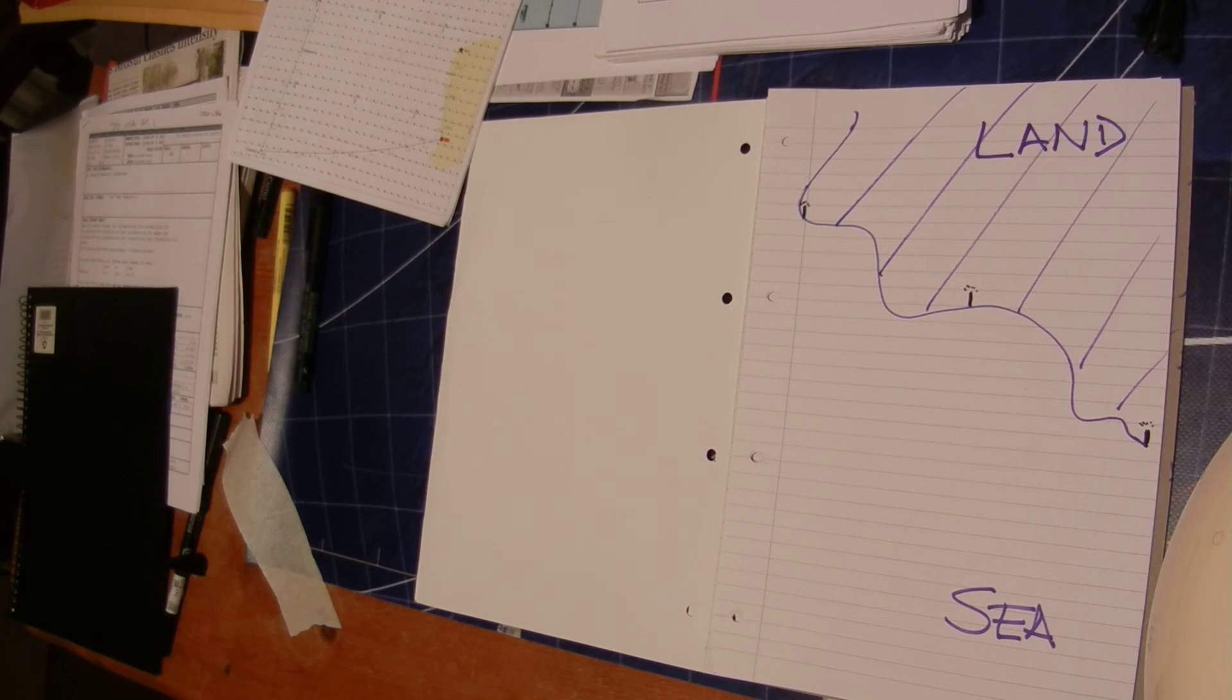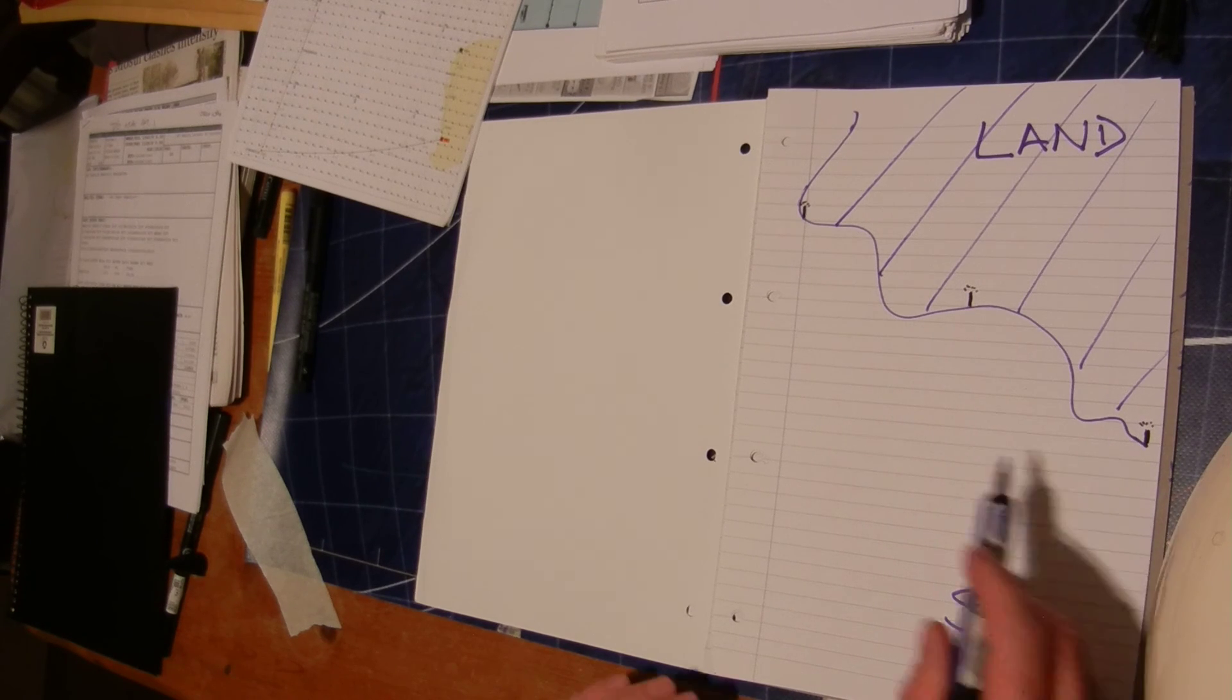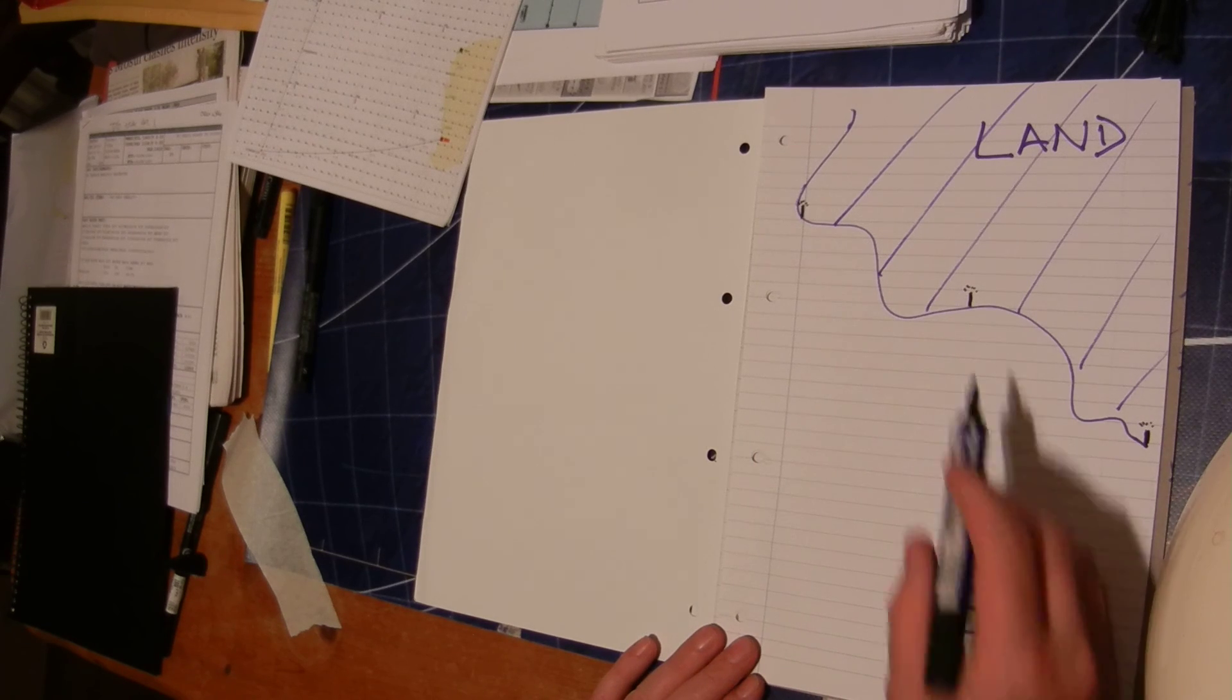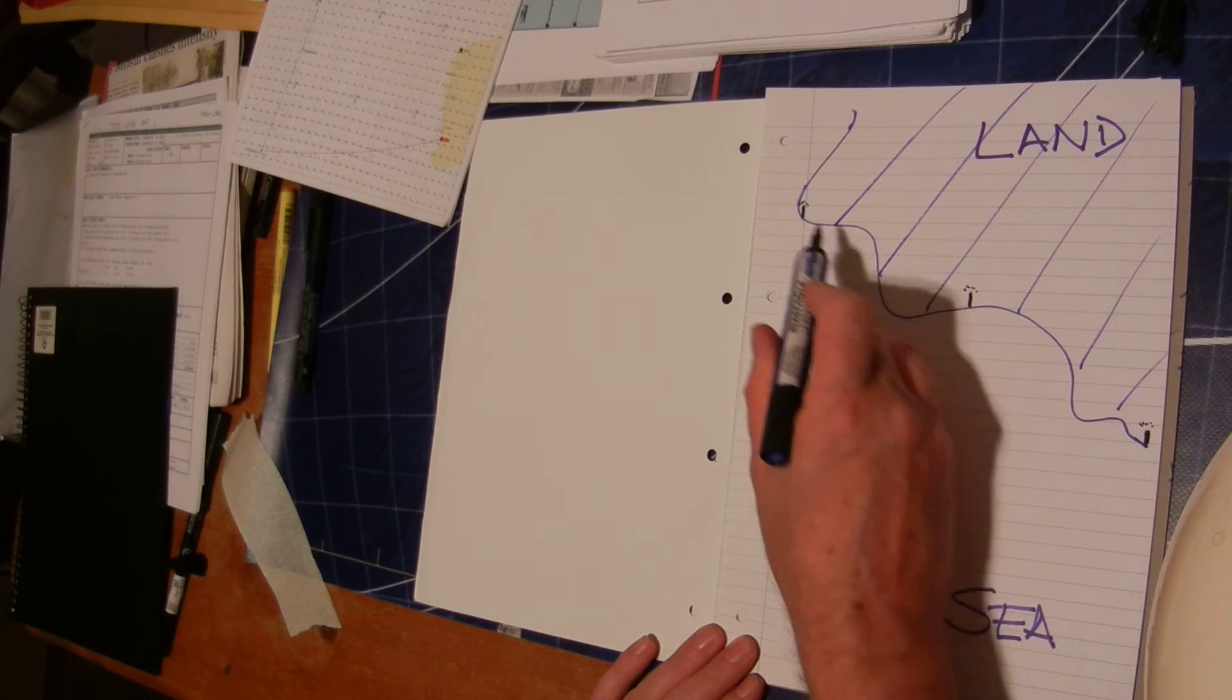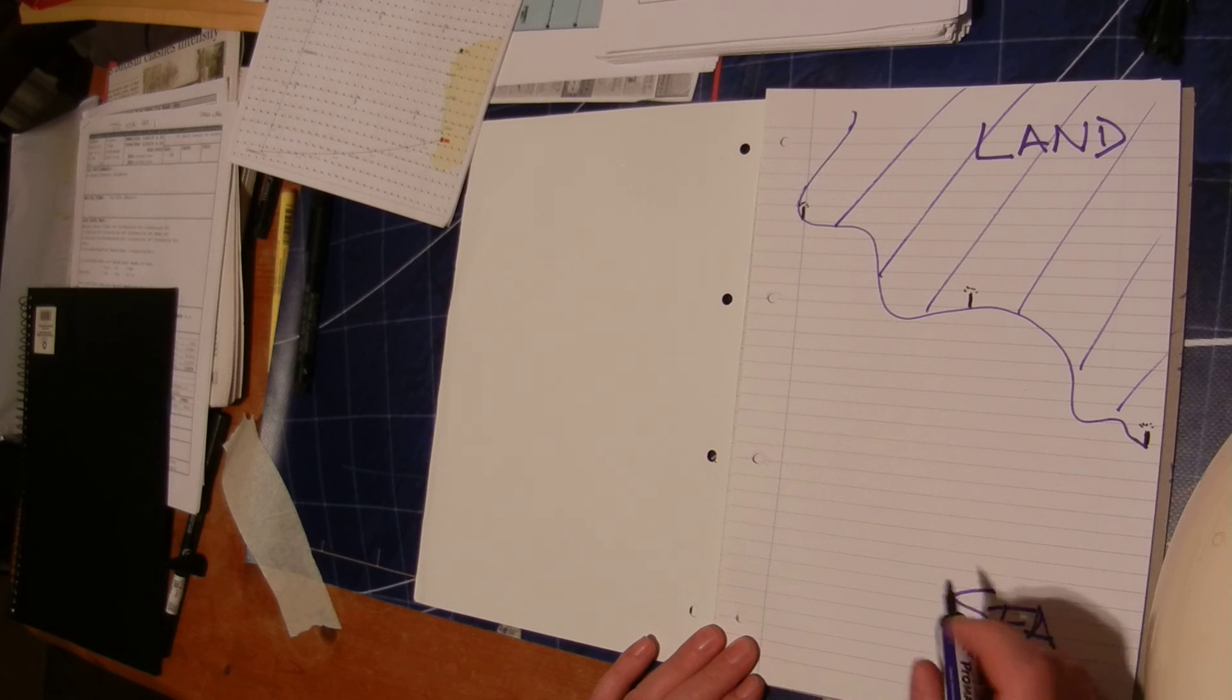When you're at sea and you're trying to fix your position, you take bearings from three different sources. So here's the sea and the land, and here we've got three different lighthouses, and we know we're down there somewhere.